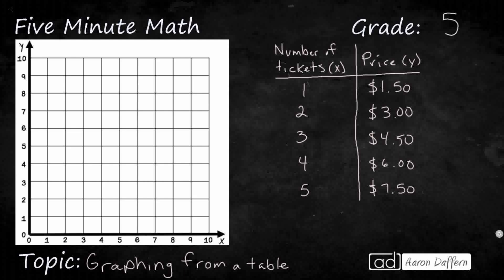This table is showing us the prices of one ticket, two tickets, three tickets, four tickets, five tickets. Now we're not trying to figure out what is the price of one ticket. They give that to us right here: one ticket costs $1.50. As you can tell here, we're just adding $1.50 each time.